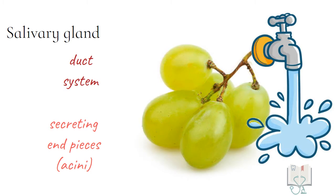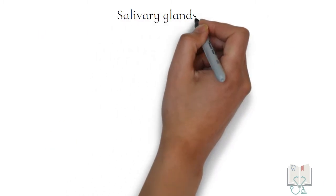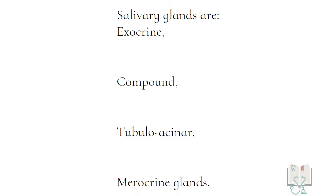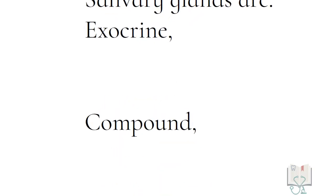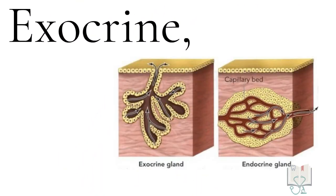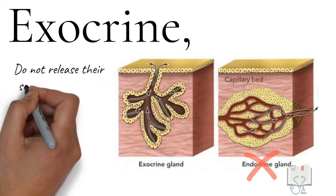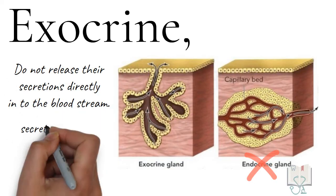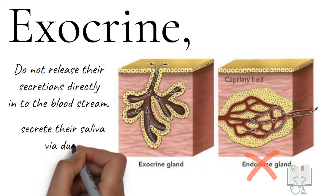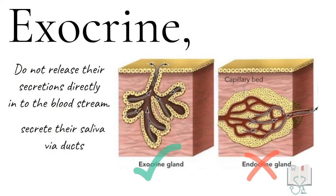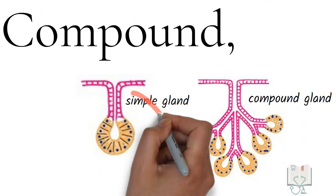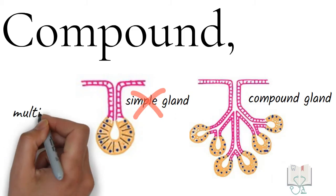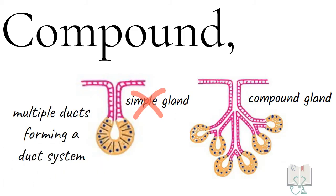Salivary glands are exocrine, compound, tubular acinar, merocrine glands. To elaborate: salivary glands are not endocrine, as they do not release their secretions directly into the bloodstream but into the oral cavity via ducts — therefore they are exocrine. Salivary glands are not simple glands as they do not have a single duct but multiple branches forming a duct system, making them a compound gland.